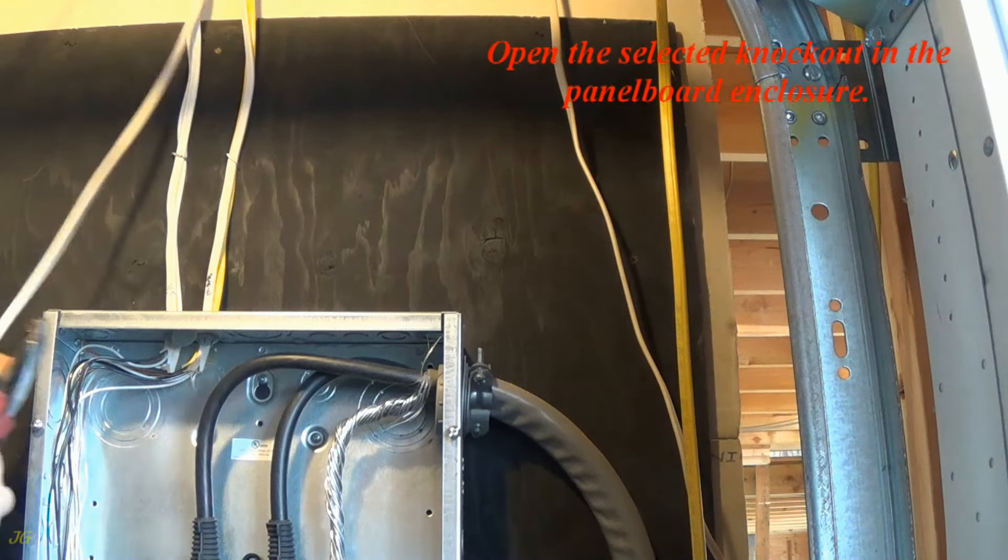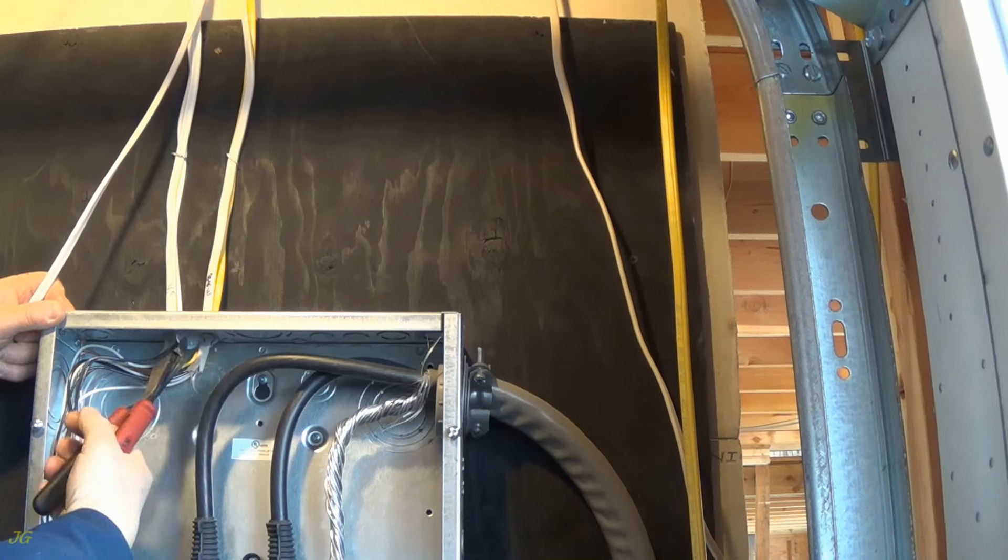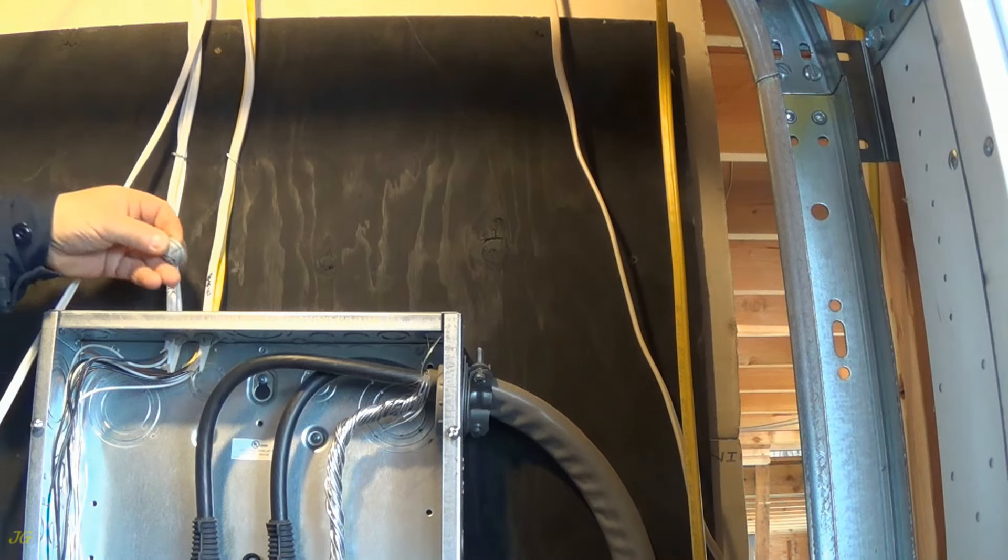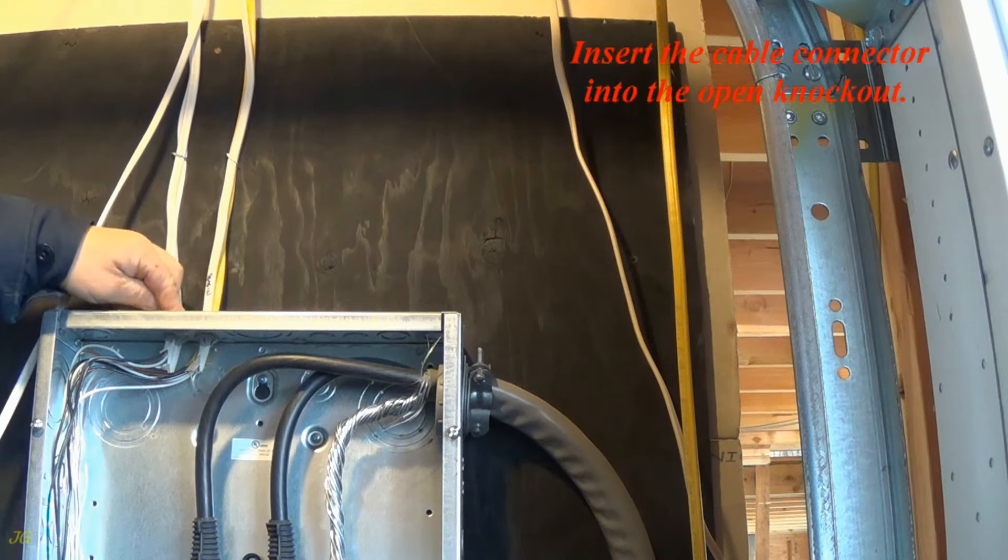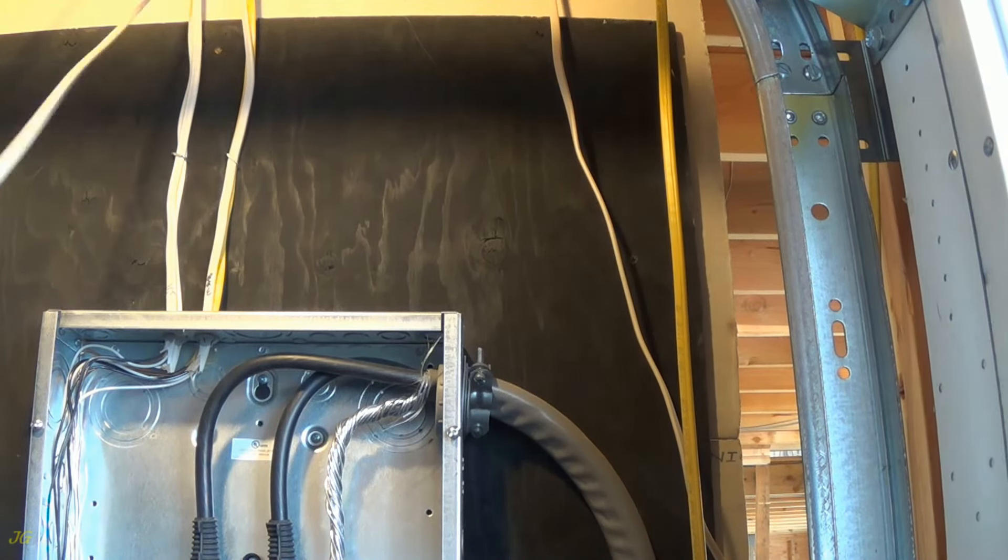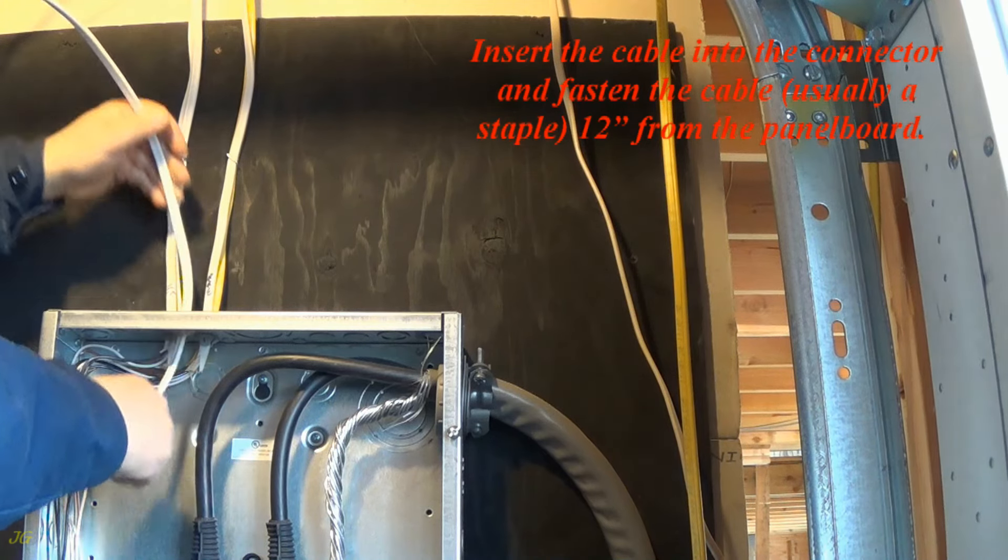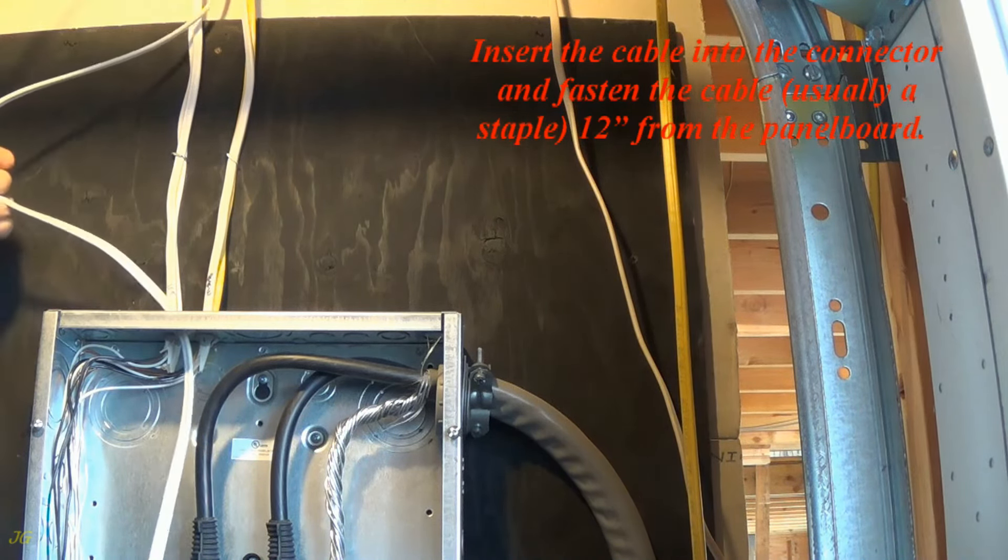Open the selected knockout in the panel board enclosure. Insert the cable connector into the open knockout. Insert the cable into the connector and fasten the cable, usually a staple, 12 inches from the panel board.